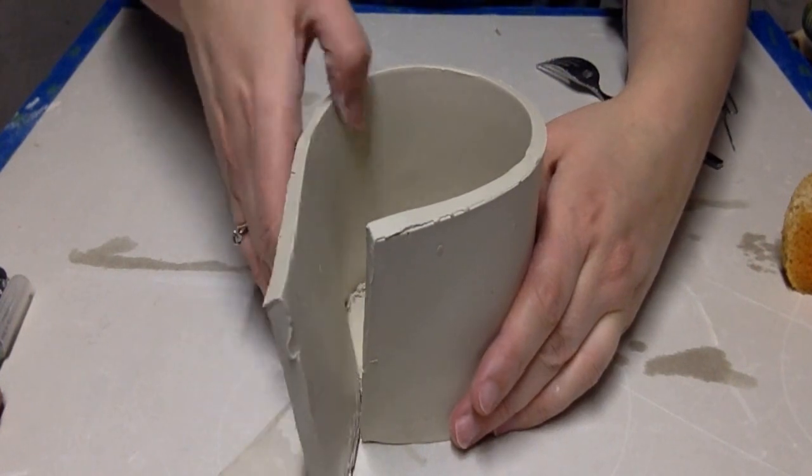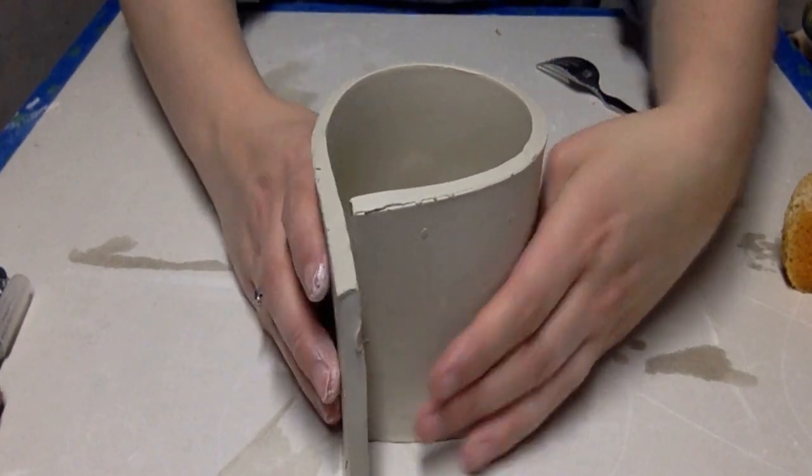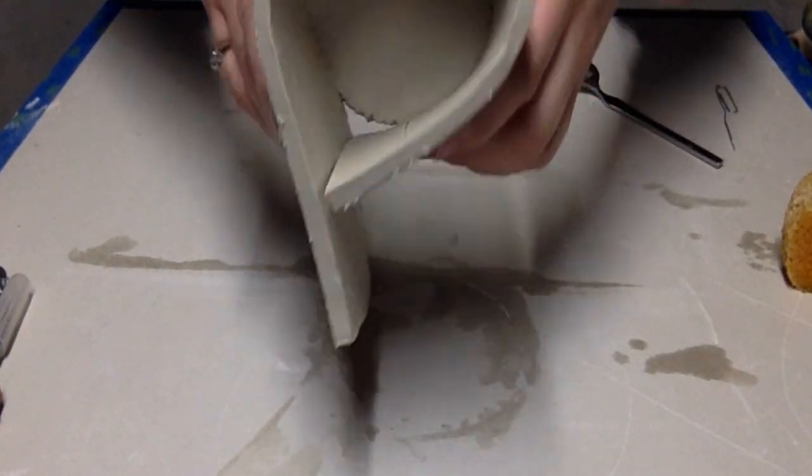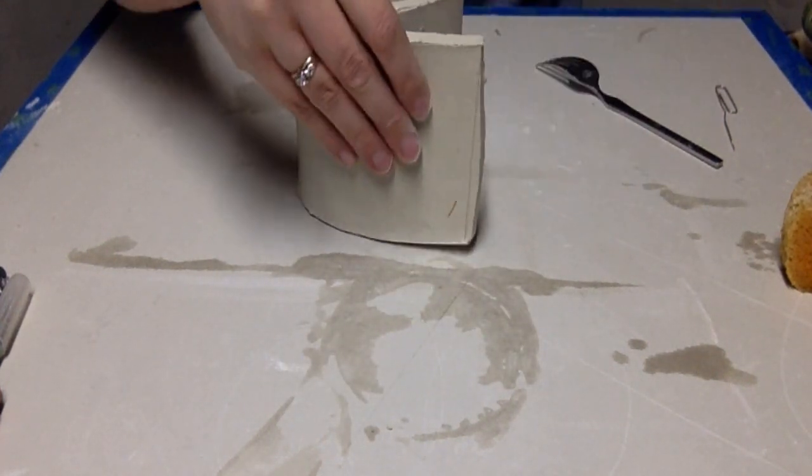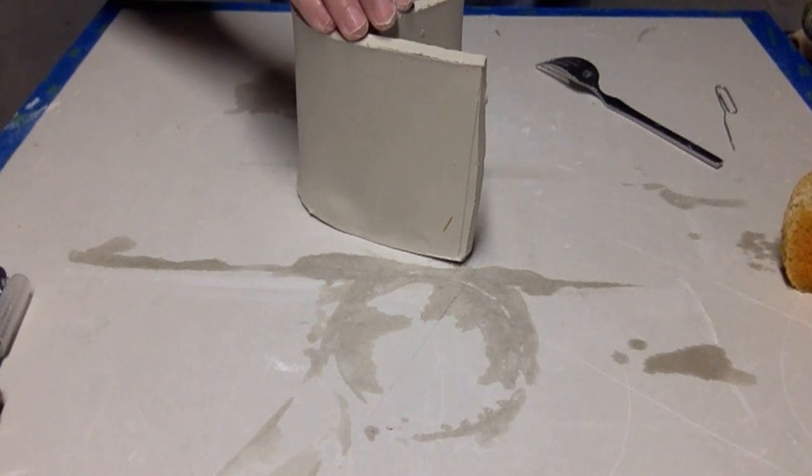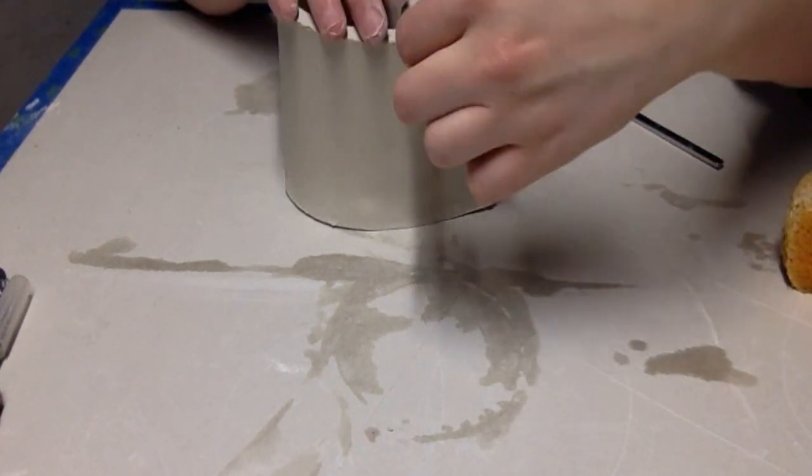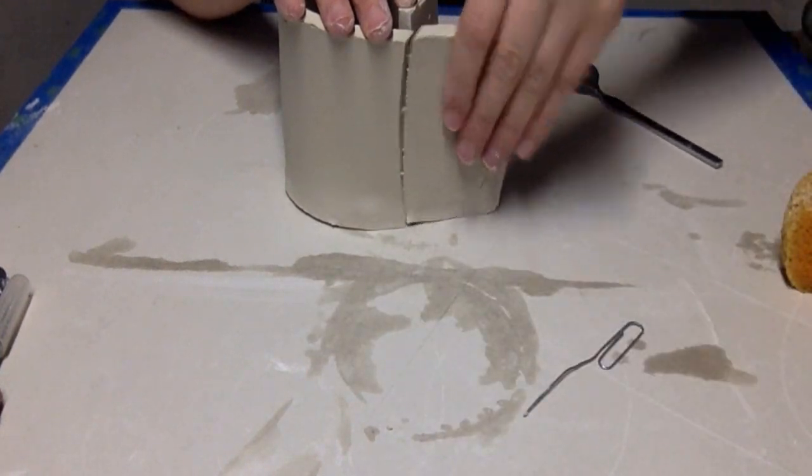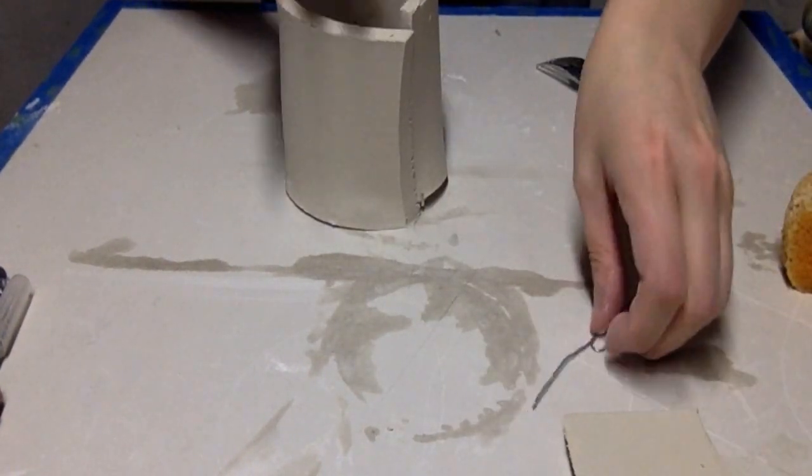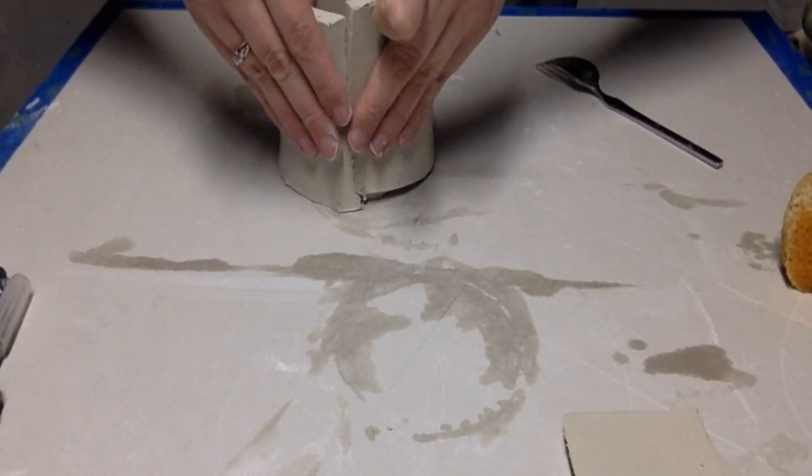As you can see, I have made the rectangle slab extra long. That's just to make sure I have enough because I can always cut off this extra. If the slab is too small, then you'll have to roll out another piece. You could also use paper templates to make sure you have just enough and not roll out more clay than you need.